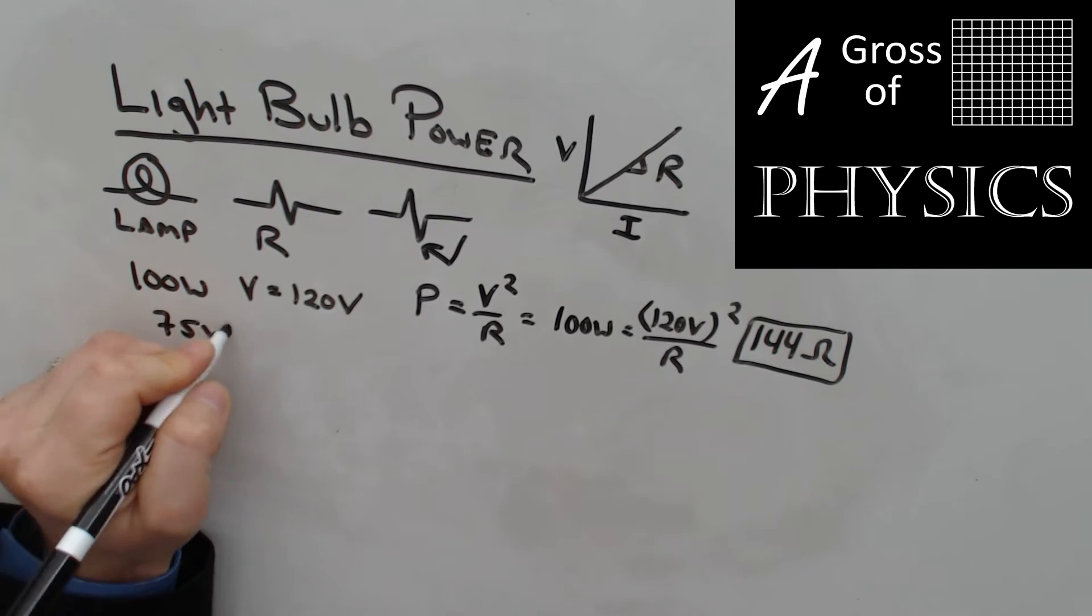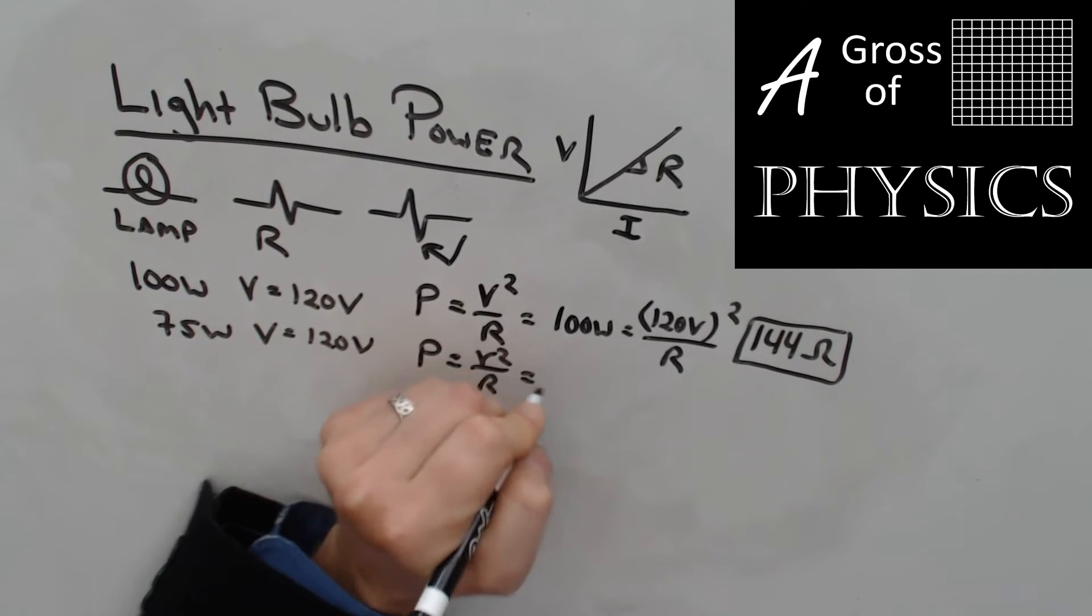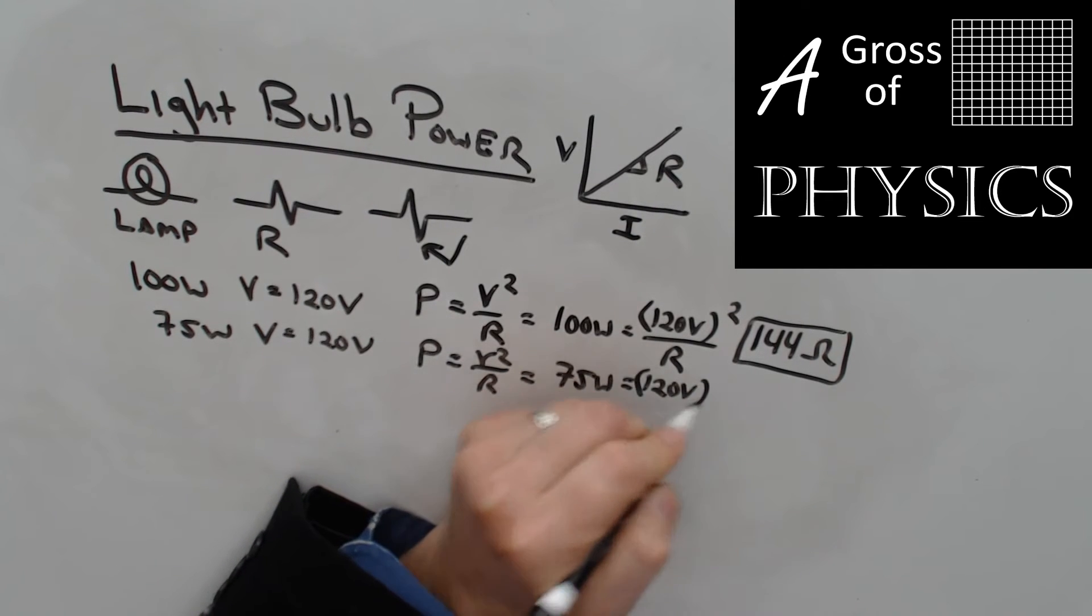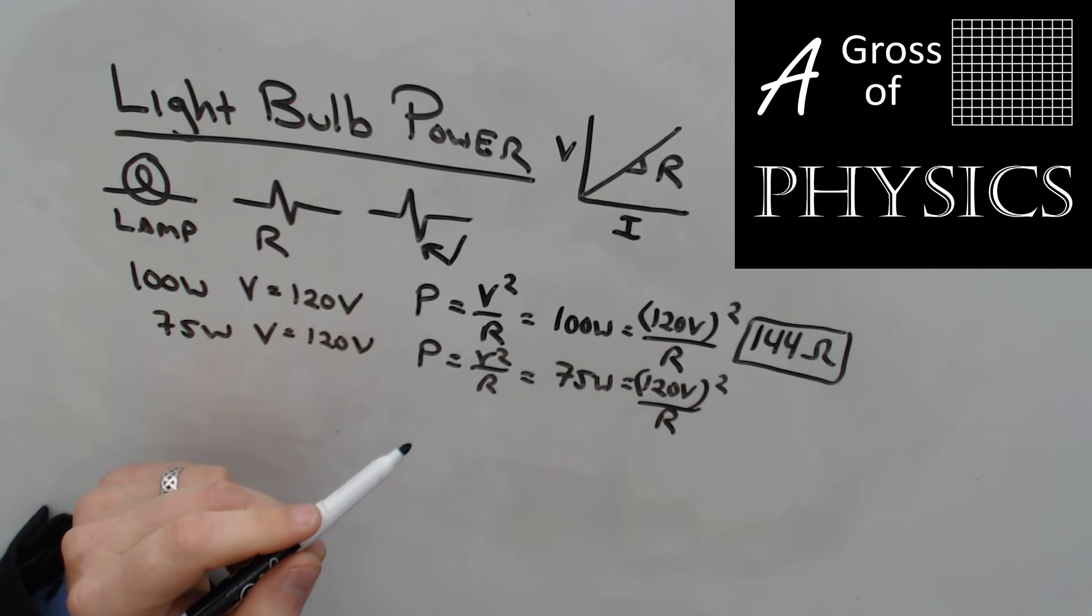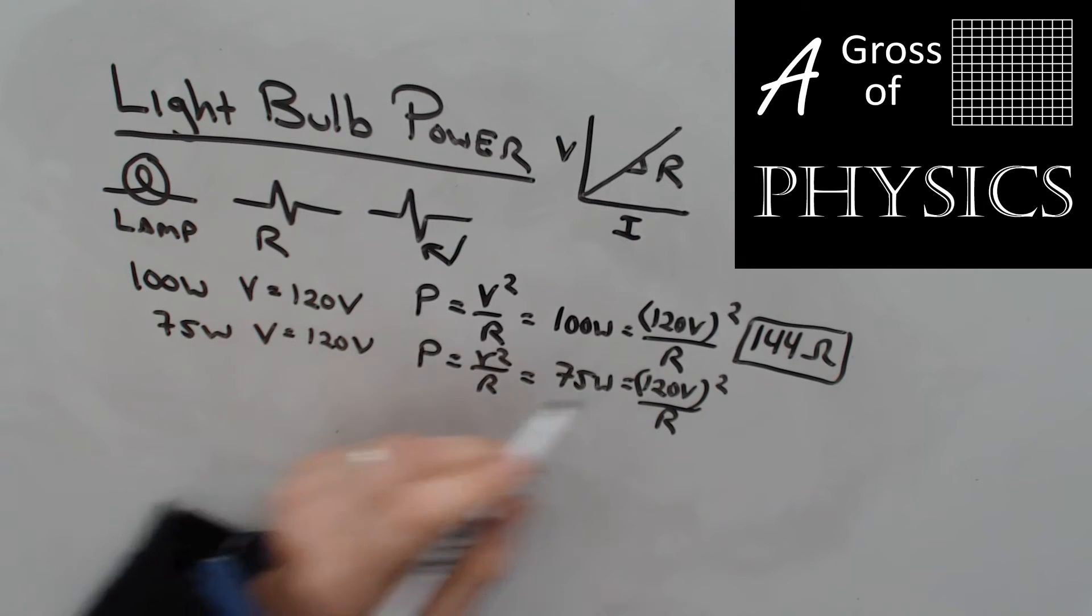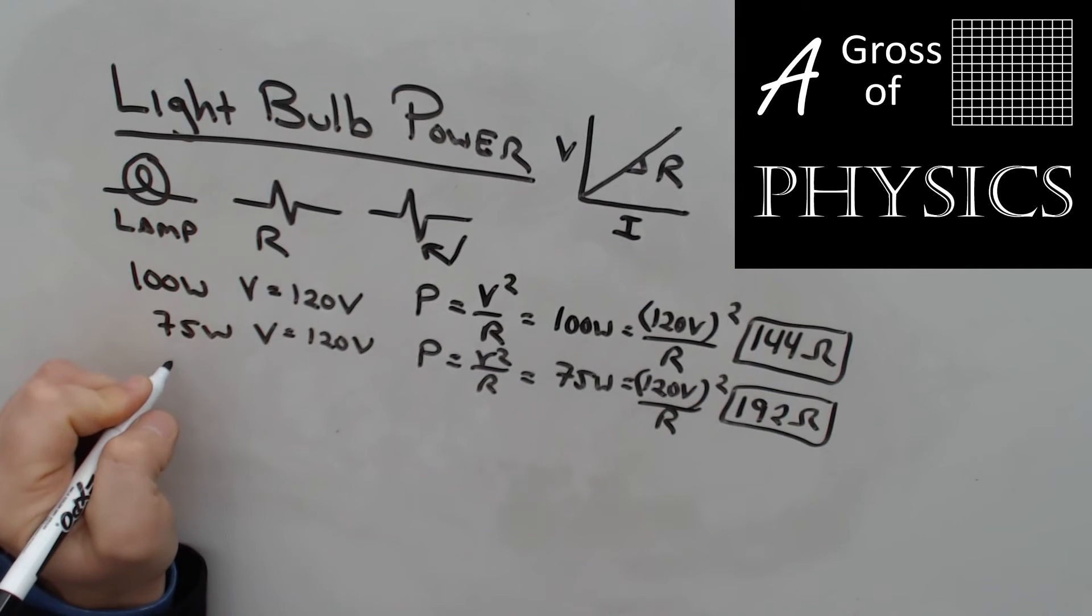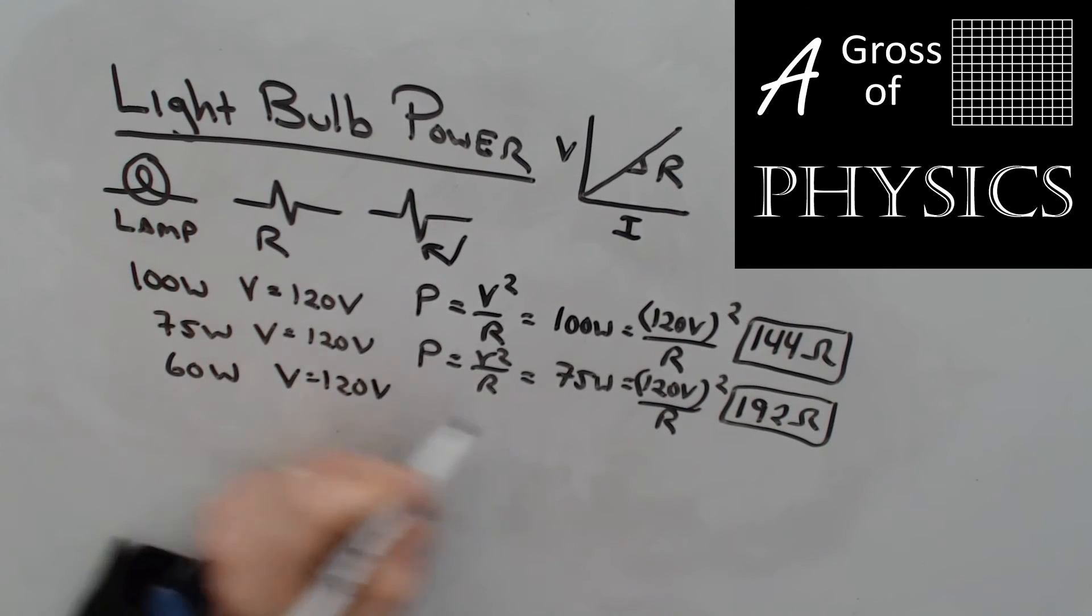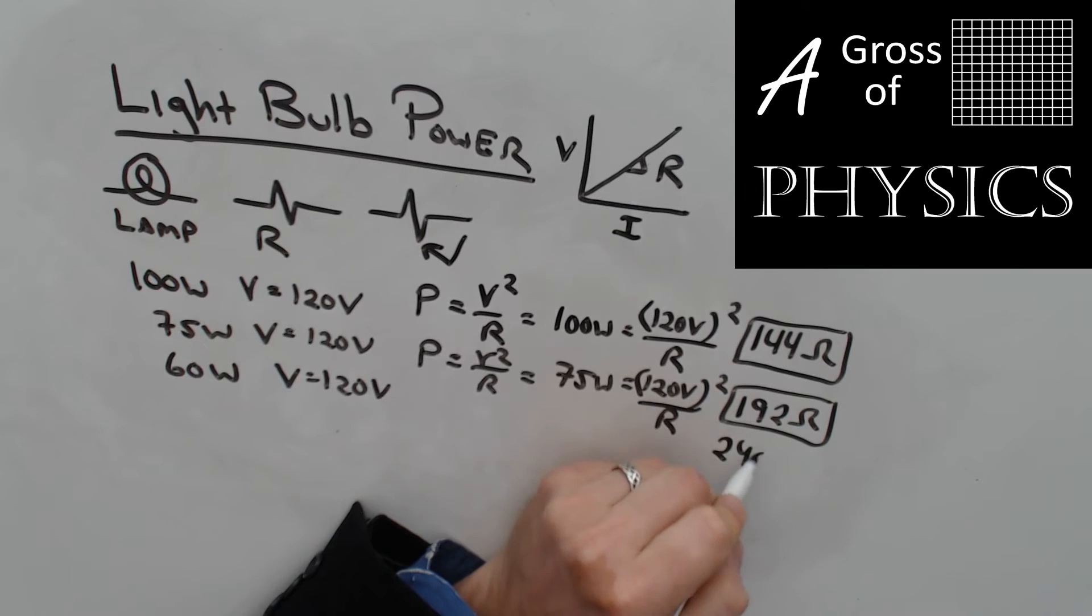How's a 75 watt bulb different? The voltage is still 120 volts. The equation is the same. But instead of the 100, we put in a 75. Voltage is the same because we're going to plug it into a wall. We have 120 squared divided by 75, and we get 192 ohms. You'll see a pattern as the value for the power goes down. 60 watts, V is 120 volts. It's going to be 120 squared divided by 60. You get 240 ohms.